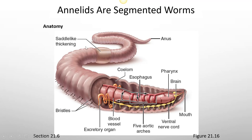Basic anatomy: they have a saddle-like thickening in the center. They have a pharynx — the throat — and a mouth. An esophagus leads down into the digestive tract. They have a coelum, a brain and nervous tissue that connects to the ventral nerve cord, and aortic arches that allow them to circulate blood. They have an excretory organ that serves as a primitive urinary system, and the end has an anus where they eliminate wastes.